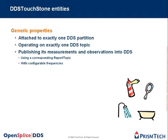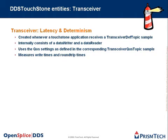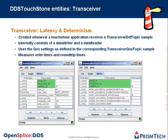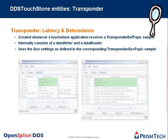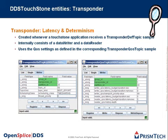Looking at the specific entities: the transceiver does latency and determinism measurements. It is created whenever a Touchtone application receives a transceiver definition topic sample, and internally consists of a data writer and a data reader. It uses QoS settings as defined in the corresponding transceiver QoS topic sample and measures write times and round-trip times. The transponder is the counterpart of the transceiver, also responsible for latency and determinism measurements, and is created when a transponder definition topic sample is received. It also consists of a data writer and a data reader with its own transponder QoS topic settings.